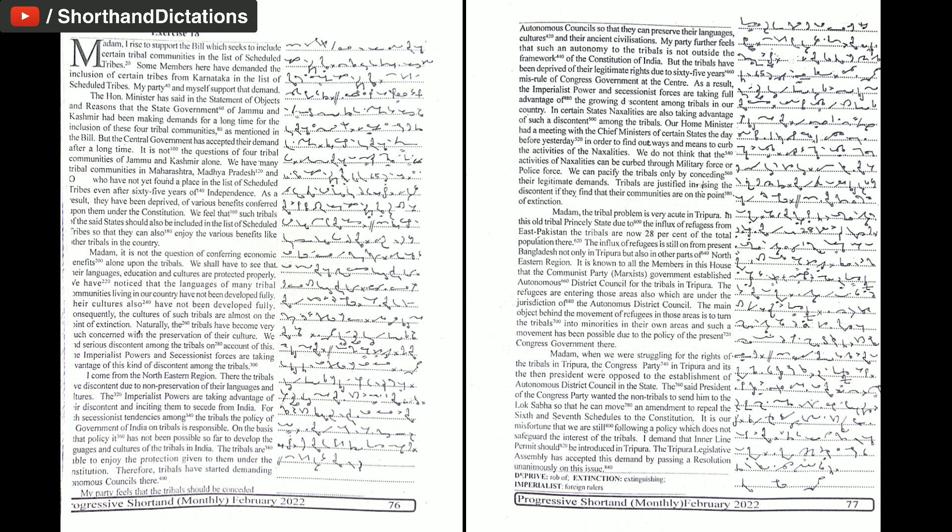The tribals are able to enjoy the protection given to them under the constitution. Therefore, tribals have started demanding autonomous councils there. My party feels that the tribals should be granted autonomous councils so that they can preserve their languages, cultures and their ancient civilizations. My party further feels that such autonomy to the tribals is not outside the framework of the constitution of India, but the tribals have been deprived of their legitimate rights due to 65 years' misrule of Congress government at the center. As a result, the imperialist power and secessionist forces are taking full advantage of the growing discontent among tribals in our country.